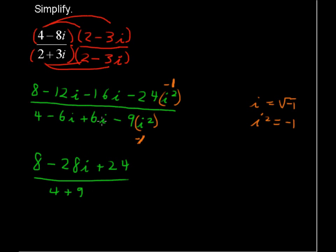The negative 6i and positive 6i cancel out and 4 plus 9—negative 9 times negative 1 is positive 9. Simplify this a little bit more: 8 plus 24 is 32.